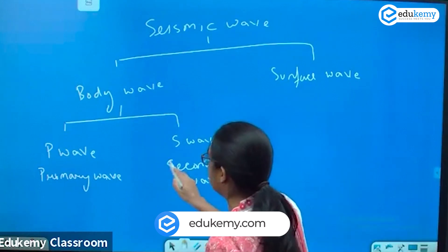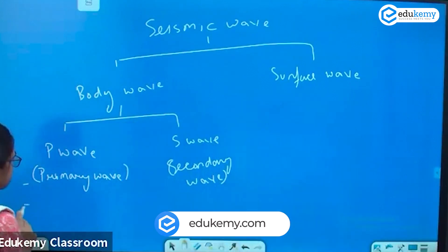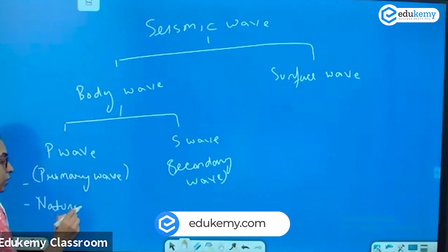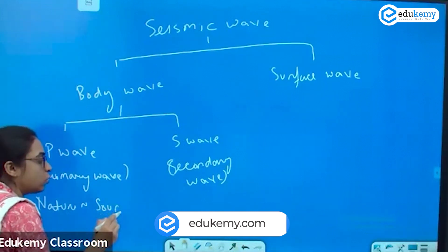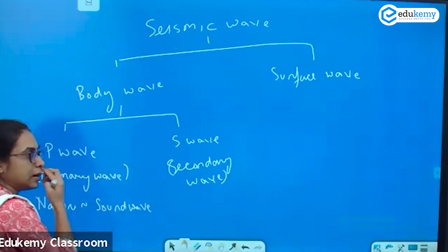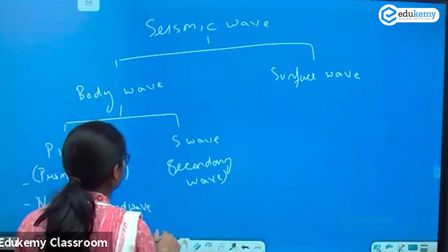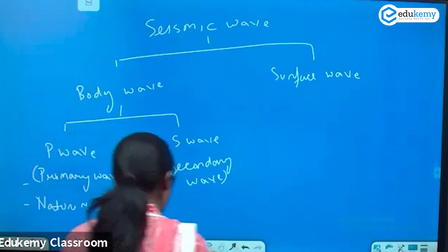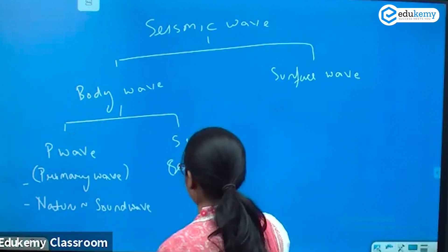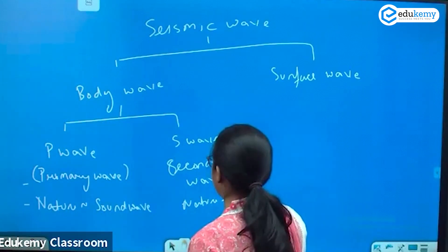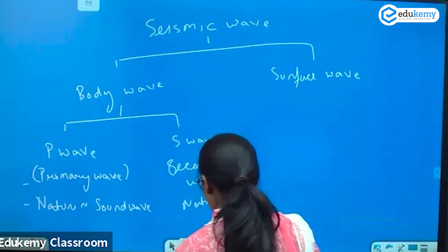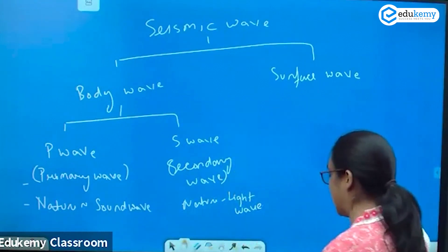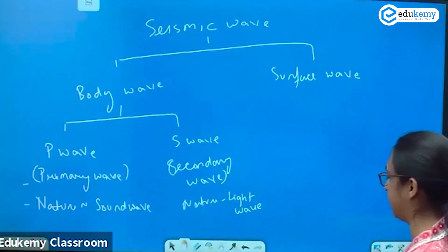The nature of the P wave is like the sound wave, whereas the nature of the S wave is that of the light wave. So this is about the S wave and P wave.